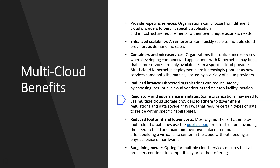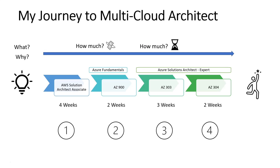In a multi-cloud setup, organizations can use one cloud vendor that provides local data storage and another vendor for storage at a different location. Reduced footprint and lower cost are also benefits — most organizations using multi-cloud use the public cloud for infrastructure, avoiding the need to build and maintain their own data centers. They can use one cloud as a virtual data center and other clouds for other services. Bargaining power also increases when multiple cloud services are competing, ensuring competitive pricing.